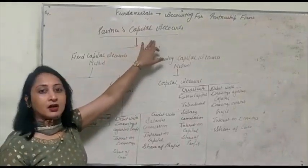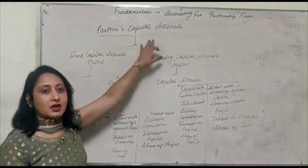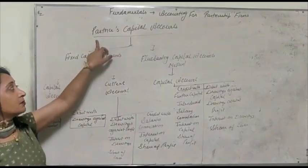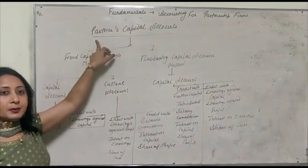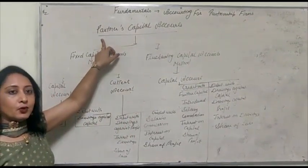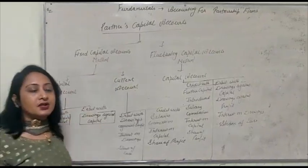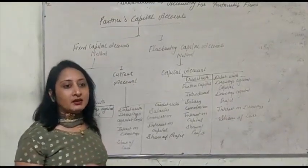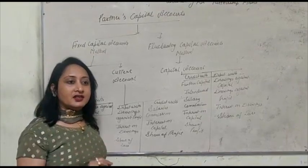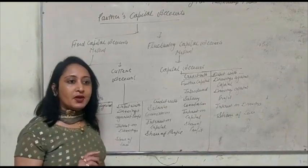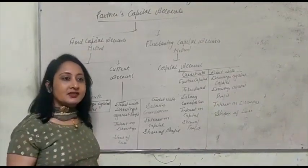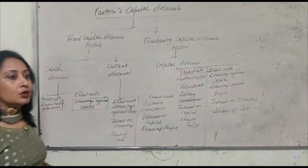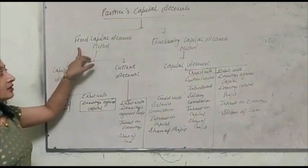The next account is the partners capital account. It is the second account prepared after the profit and loss appropriation account. Capital accounts of each partner are maintained separately, because each partner has separate transactions with the firm. There are two types of capital accounts.